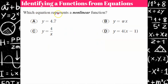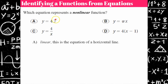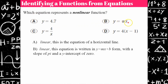Now we're going to talk about identifying a function from an equation. Which one of these represents a non-linear function? A is linear — this is the equation of a horizontal line with a y-intercept of 4.7 and a slope of 0. B is linear, written in the form y equals mx plus b. Don't let the symbol pi distract you — pi represents a value, just a non-terminating number. The slope is pi and the y-intercept is 0, so it's a line.